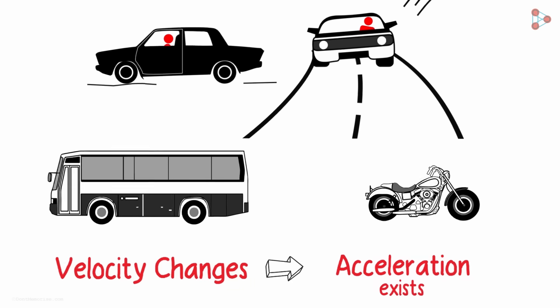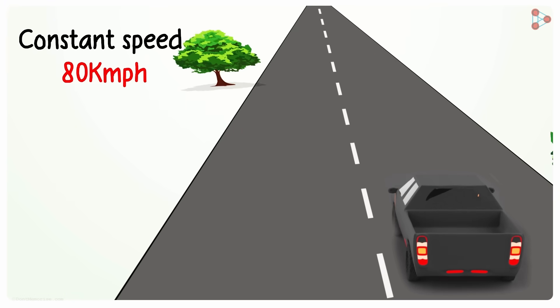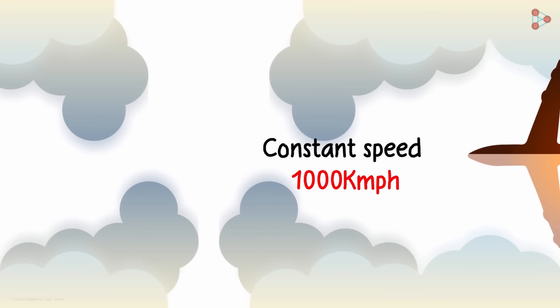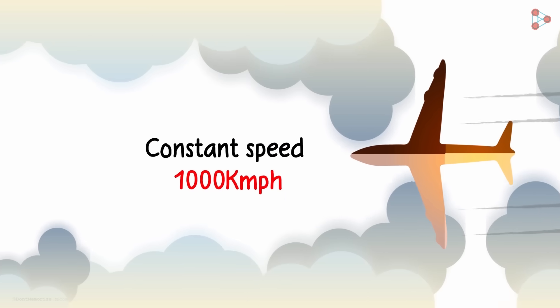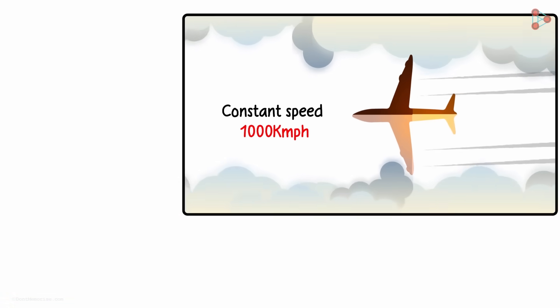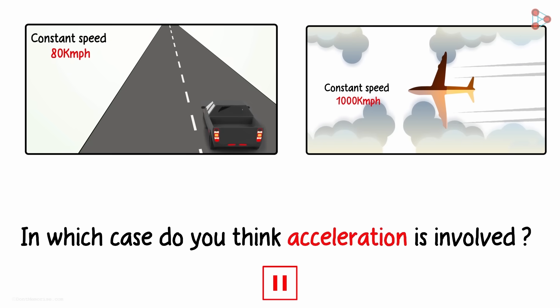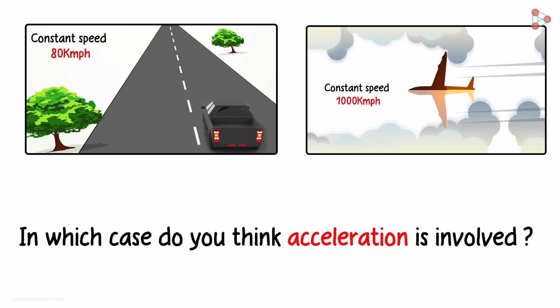Okay, let me give you two examples. In the first one, a car is travelling in a straight line at a constant speed of 80 km an hour. And in the second one, a plane is travelling in a straight line at a constant speed of 1000 km an hour. In which case do you think acceleration is involved? None.